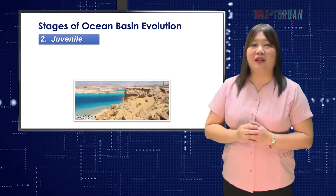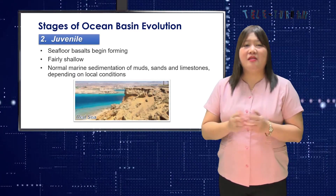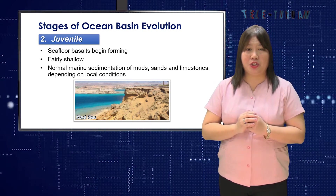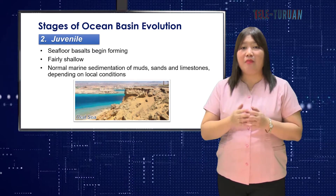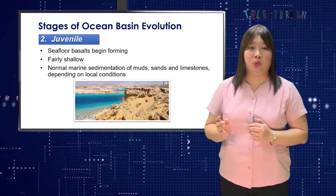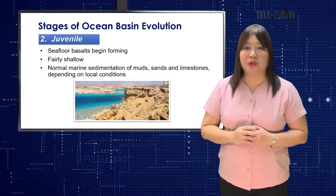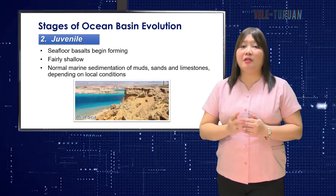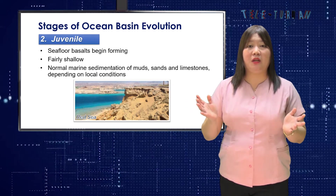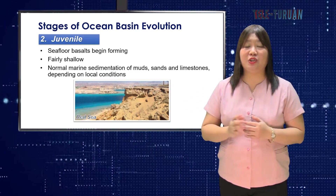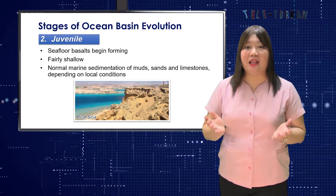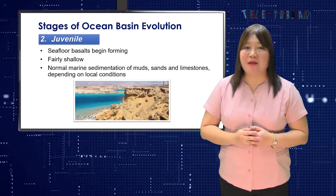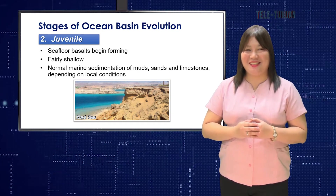Stage 2 is described as juvenile. Seafloor basalts begin forming as continental sections diverge. Initially, the young marine basin is fairly shallow. If repeated influxes of seawater become wholly or partly evaporated, salt deposits will accumulate. Otherwise, there will be normal marine sedimentation of clays, sands, and limestones depending on local conditions. One of the clearest examples of a young ocean basin is the Red Sea.